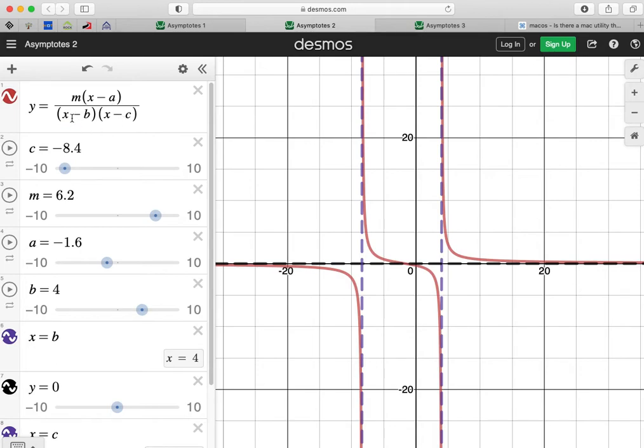So remember the idea of where the vertical asymptotes occur. They occur when the denominator is zero, effectively, when we can't actually work out a y-coordinate.